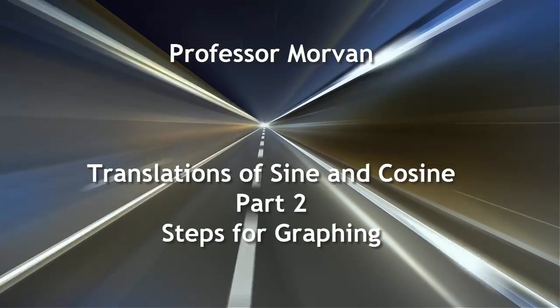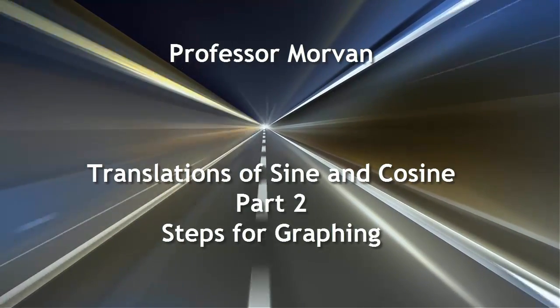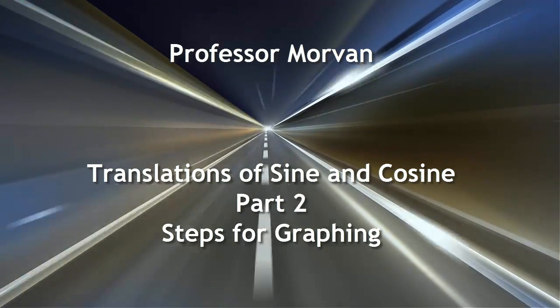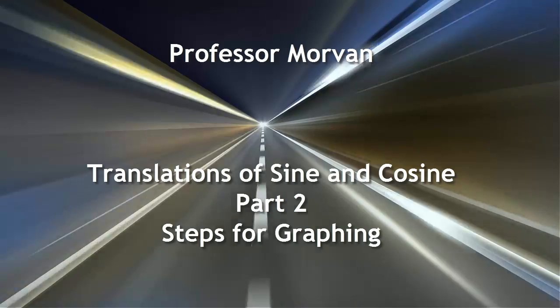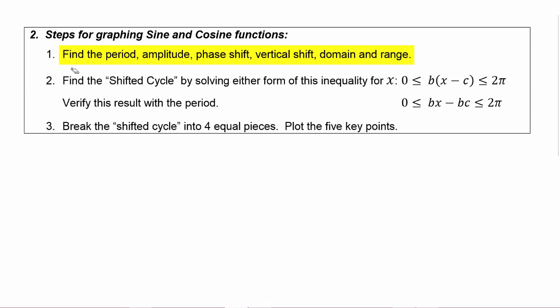In part two of our lesson on translations of sine and cosine graphs, you're going to learn the steps for graphing sine and cosine functions. First, you will find the period, amplitude, phase shift, vertical shift, domain, and range for the function. Then you will use these elements to check your work as you go on in your graph, so you can verify that you're making your graph correctly.